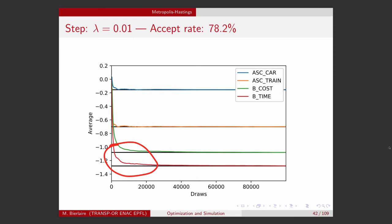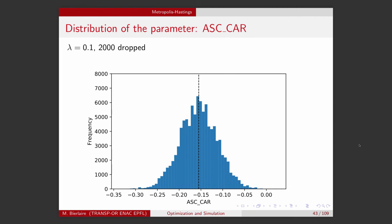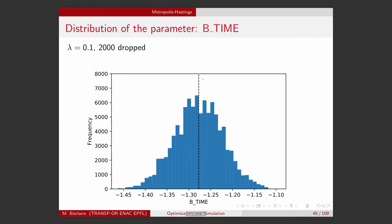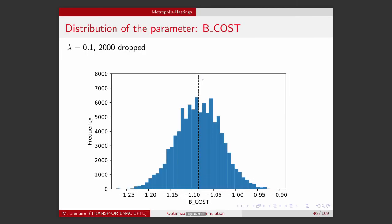For illustration, I've plotted histograms of the draws obtained for each of the parameters and compared them with the values from maximum likelihood estimation, represented by a vertical dashed line. As you can see, we have roughly a normal distribution around the true value — for the intercept for car, the intercept for train, the beta_time coefficient for travel time, and the beta_cost coefficient for travel cost.